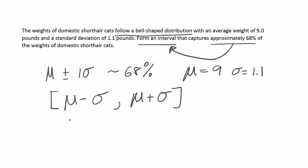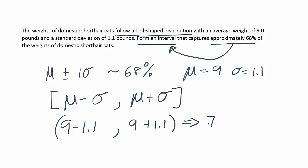The rest is just simple arithmetic: 9 minus 1.1 up to 9 plus 1.1. That gives us 7.9 when you take 1.1 away from 9, up to 10.1 when you add 1.1 to 9. This interval captures approximately 68% of all the weights of domestic short-haired cats.